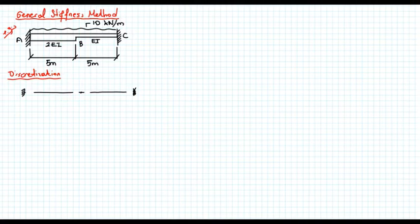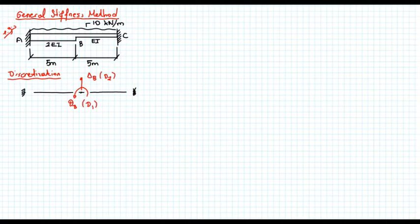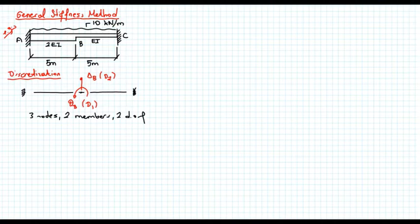At node A there are no degrees of freedom. At node B we have translation — let's call it delta B — and rotation theta B. The rotation will be my first degree of freedom, D1, and the translation will be the second degree of freedom, D2. So we have three nodes, two members, and two degrees of freedom, which means I need two equilibrium equations.